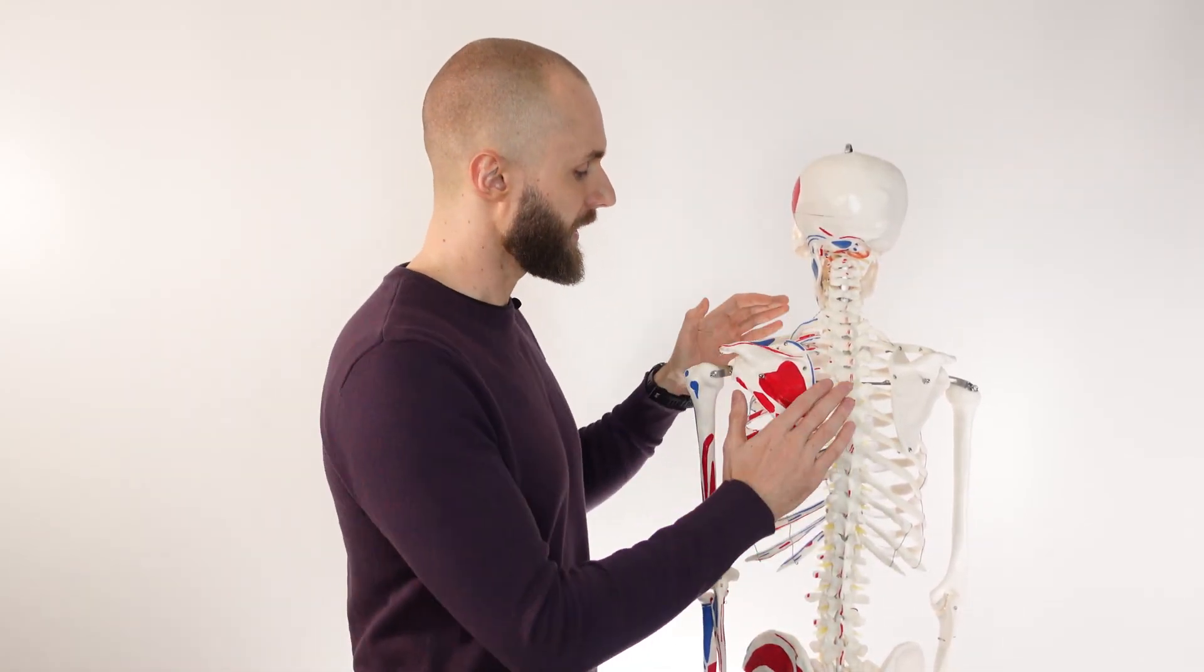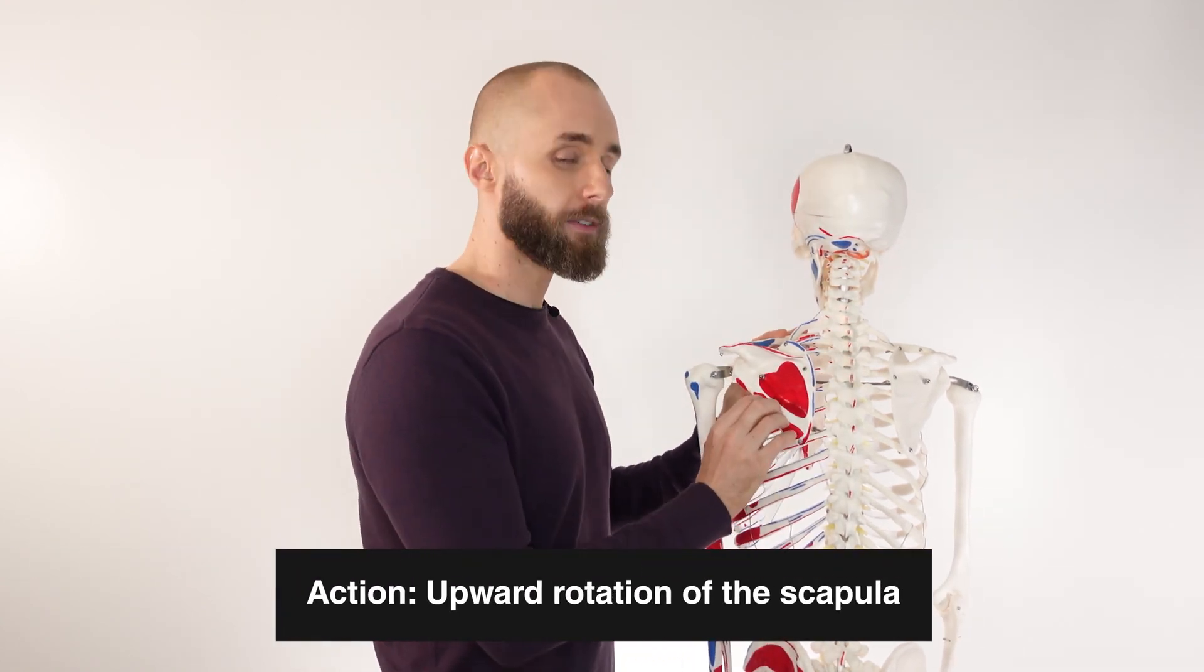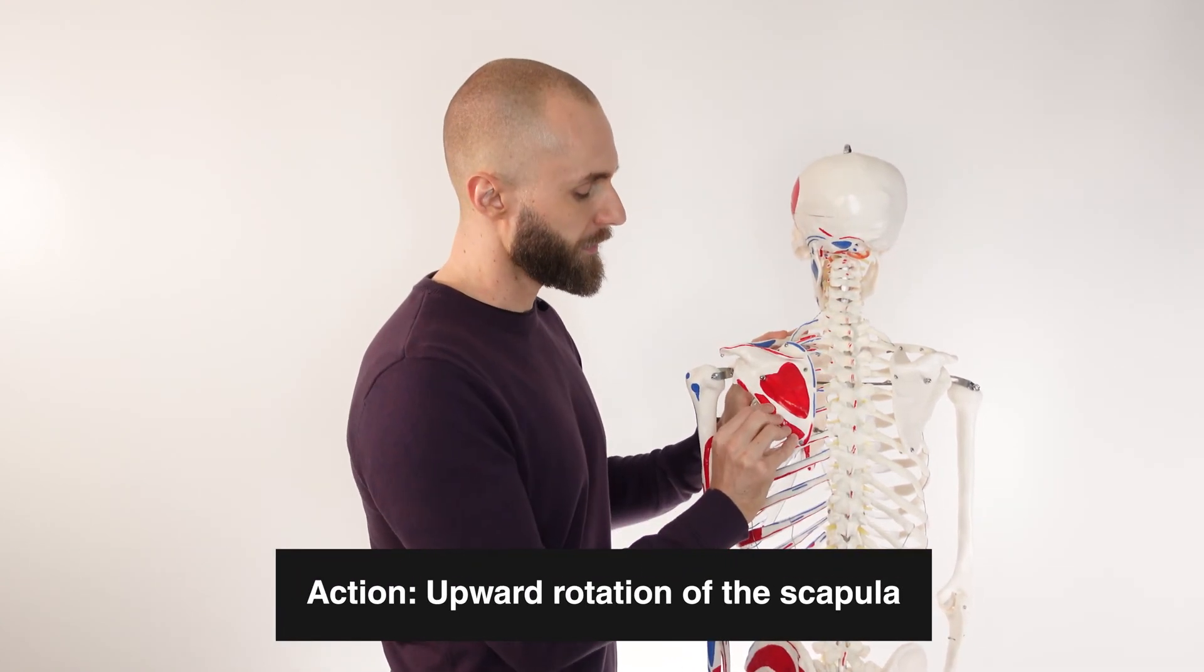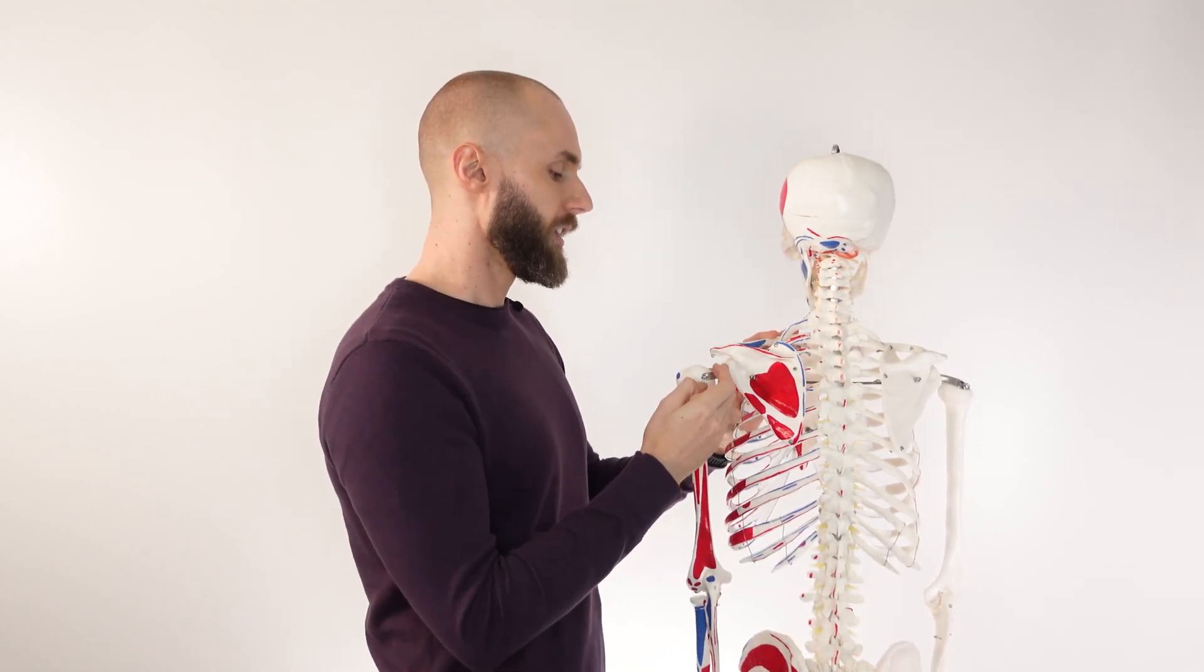In addition to protraction, it can also cause rotation of the scapula. Those inferior fibers of the serratus anterior can pull on the scapula here and that will result in a rotation of the scapula which would move the glenoid cavity upwardly.